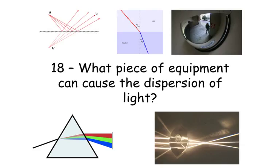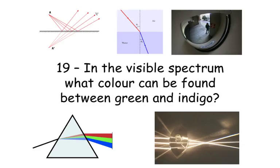Question nineteen. In the visible spectrum, what colour can be found between green and indigo?